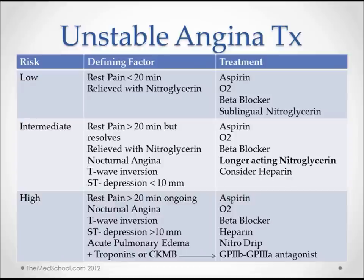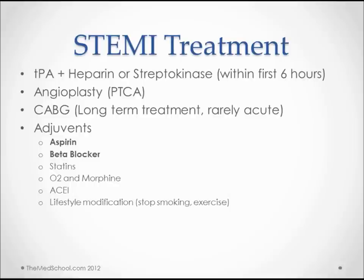If we have more pronounced ST depression, pulmonary edema, and elevated troponin levels, we'll want to add heparin for sure, maybe a nitro drip, and if there are troponins or CK-MB elevation we'll add a GP IIb/IIIa antagonist. If we have a STEMI under six hours old, we're going to use tPA or streptokinase — with tPA we add heparin. Or if we have a cath lab nearby, we'll go in for angioplasty.